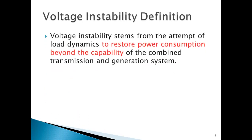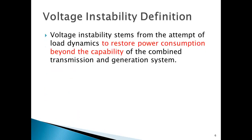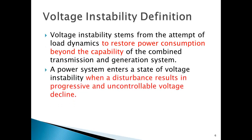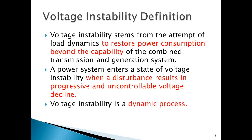How is voltage instability defined? Voltage instability stems from the attempt of load dynamics to restore power consumption beyond the capability of the combined transmission and generation system. A power system enters a state of voltage instability when a disturbance results in a progressive and uncontrollable voltage decline. The main symptom of voltage instability is low voltage. Voltage instability is a dynamic process as the voltage varies depending upon power system loads from time to time.